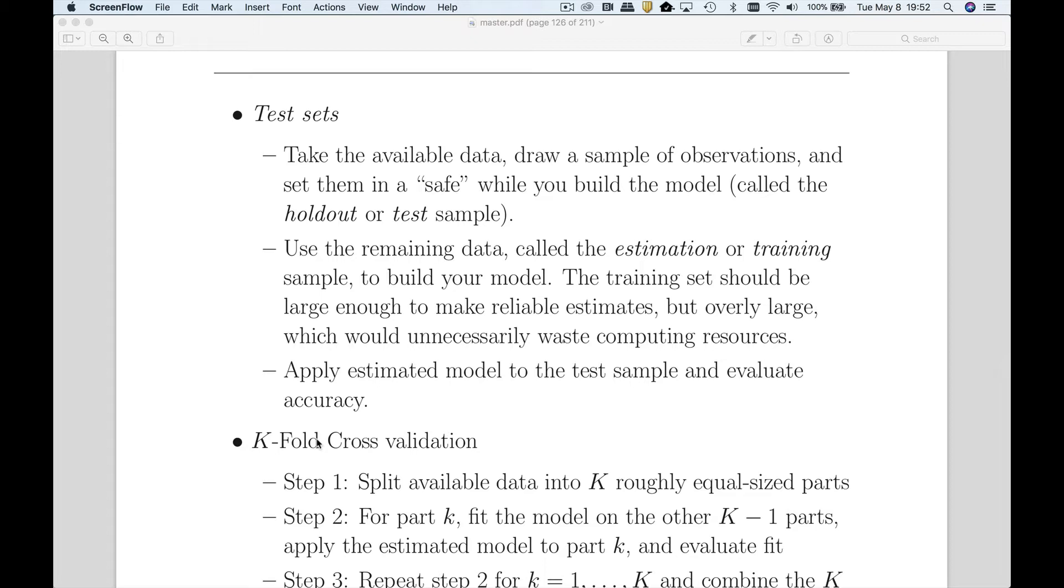So when do you use each? I'd recommend a test set whenever you're data rich, use k-fold cross-validation whenever you're data poor. If you have tons of data, you can afford to set aside some test data. If data is kind of scarce, maybe you only have 500 cases, then k-fold cross-validation is going to make much more efficient use of the data.